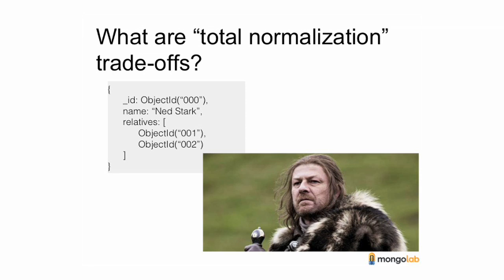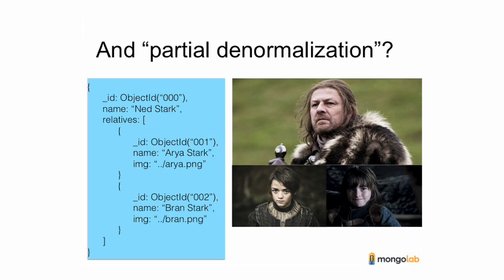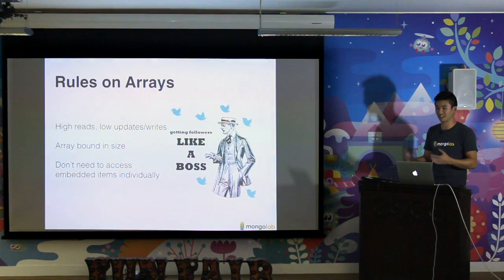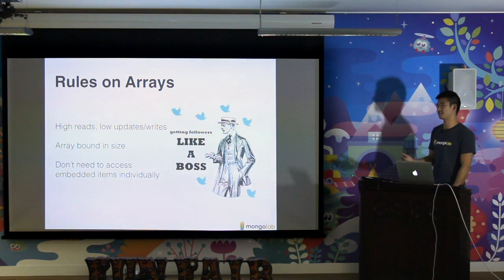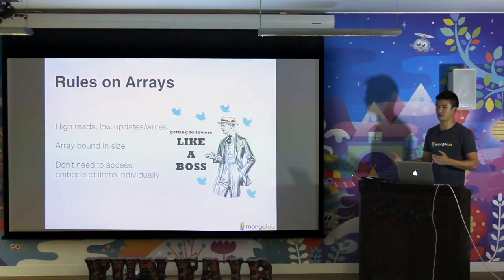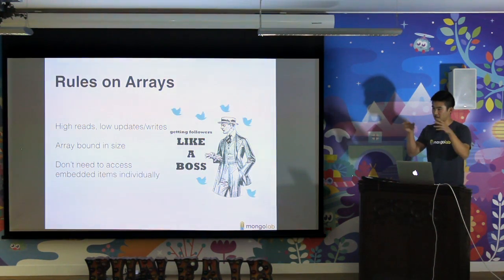If you have an array within your document and all you store are object IDs, which are essentially pointers to other tables, here's Ned Stark — this is what you can expose to the user in one query. And if you want partial denormalization, you can store his relatives' names and their pictures — this is what you can expose in the UI with just one query. There are trade-offs between normalization and partial denormalization. The big rules on arrays: high reads, low updates and writes. If you're constantly updating and writing to arrays, it's going to move a lot on your physical disk, which is very taxing to the system. Hopefully the array is bound in size. If you're making a social application and you're trying to map followers to each other, depending on how frequently followers change and how many followers a user can get, you might want to map it in something that's not an array. You don't want to access the embedded items directly — you want to make everything a first-class field defined simply, which makes things a lot faster.